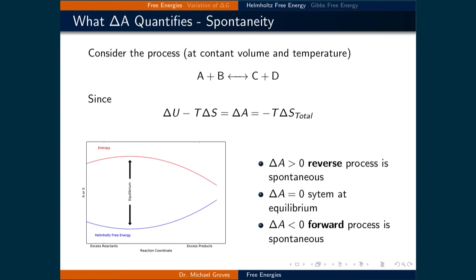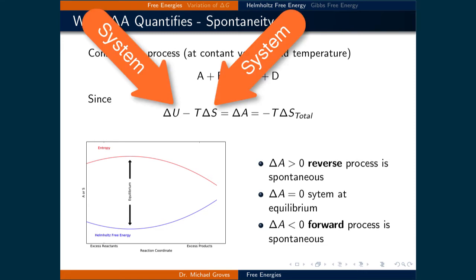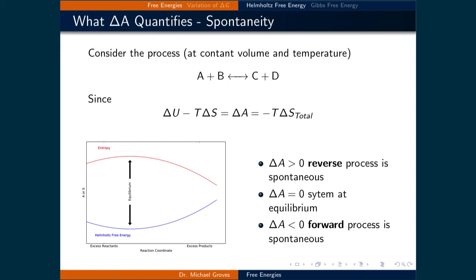Let's now look at the Helmholtz free energy and determine what it represents. First of all, it can be used to determine if a process is spontaneous. Consider a process A plus B in equilibrium with C plus D. We can calculate the change in internal energy and entropy of a process at a given temperature to find the change in Helmholtz free energy. This will tell us the change in the total entropy for the process times the negative temperature. This is very useful because the terms used to find delta A are all based on the system. The plot on the bottom left illustrates both entropy and Helmholtz free energy as a function of reaction coordinate, and you can see that they are mirror images of each other — as one increases, the other decreases.